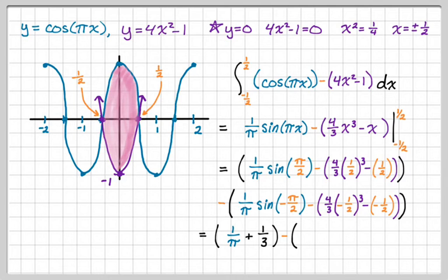And then minus the quantity. When you plug in here, you get negative 1 over pi. And then minus 1 third. And then all of this overall is 2 over pi plus 2 over 3. So that's actually the area of the region bounded by the curves.